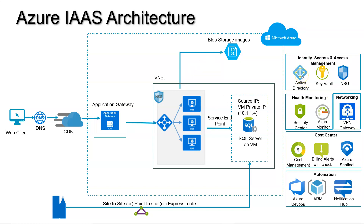Azure Active Directory handles roles and responsibilities — authentication and authorization for your Azure resources (not your application logic). Employees are assigned certain roles so they can manage resources. Key Vault is used to maintain certificates and secrets. Network Security Groups (NSGs) protect your applications from threats — you can block specific IPs. Security Center monitors your applications regularly and notifies you if threats are found. Azure Monitor lets you continuously monitor your VMs and configure alerts when they go down. VPN Gateway connects your VNets from on-premises.